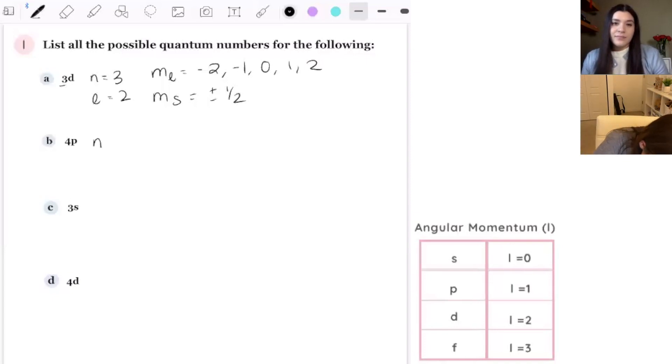So n equals 4, l equals 1, m sub l equals, do I still put like 0 on? Yes. Okay. And s. Good.